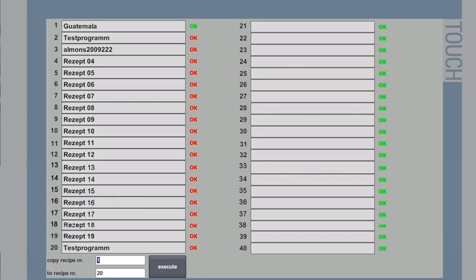If there is a similar profile, you can make a copy. You can copy, for example, the Guatemala to recipe number 4 and you can make some changing in that recipe. So you have a brand new recipe really quick prepared.